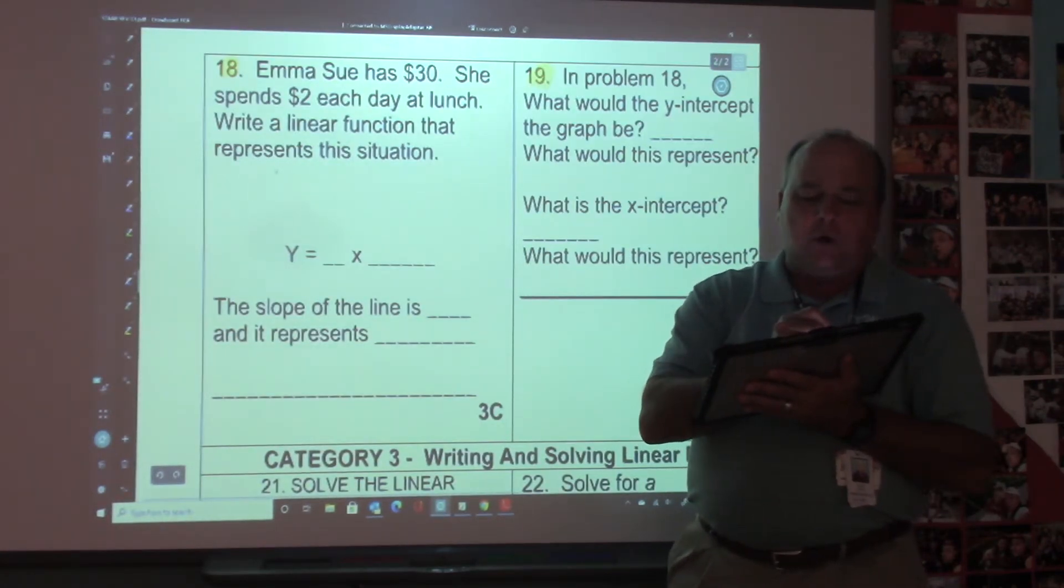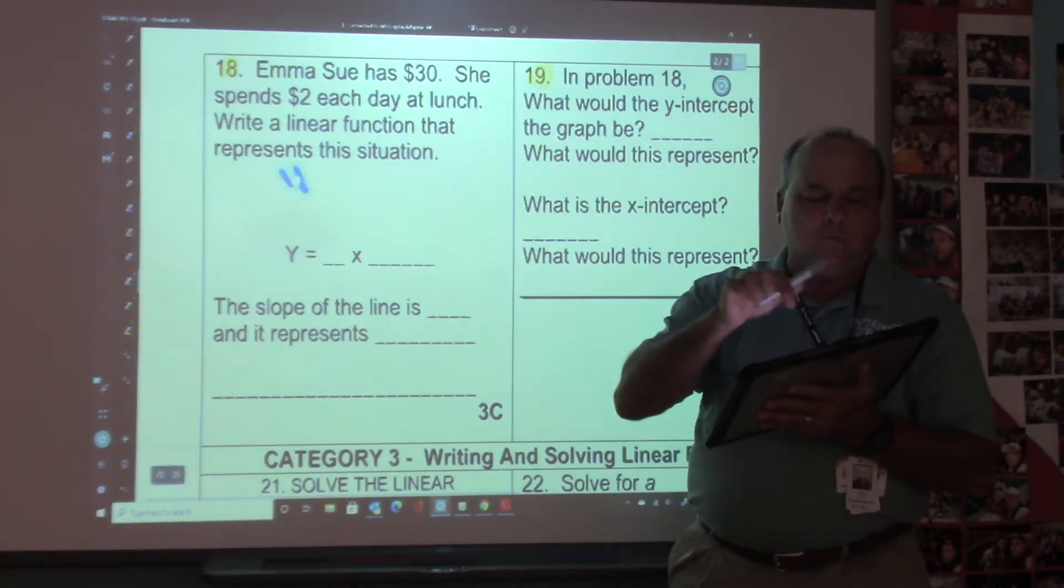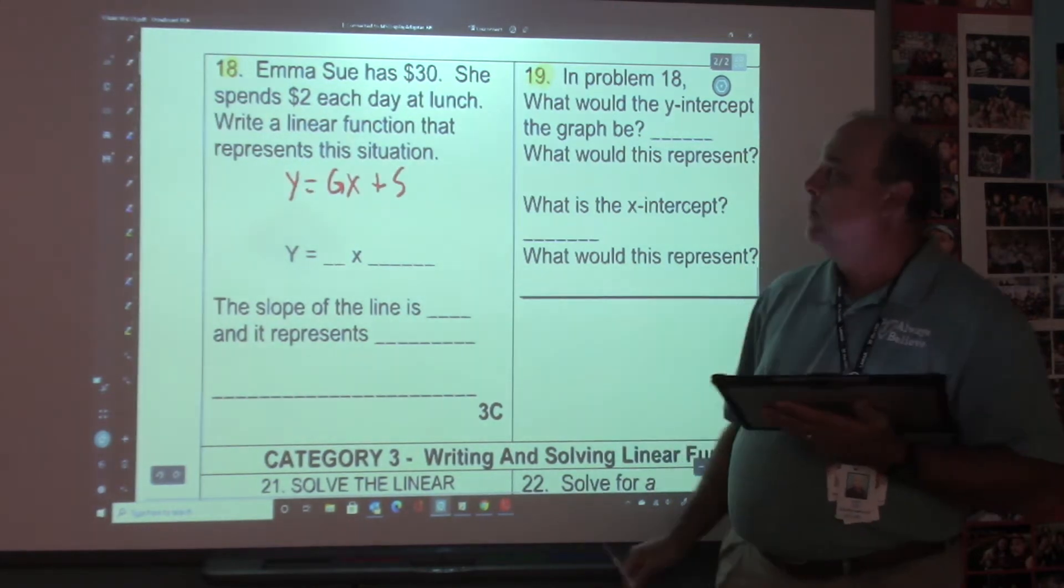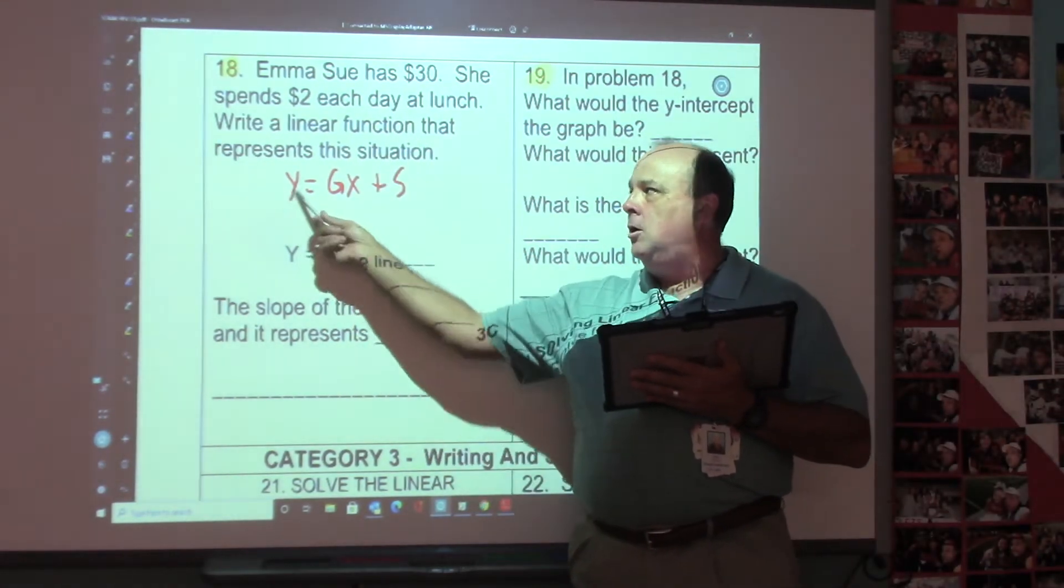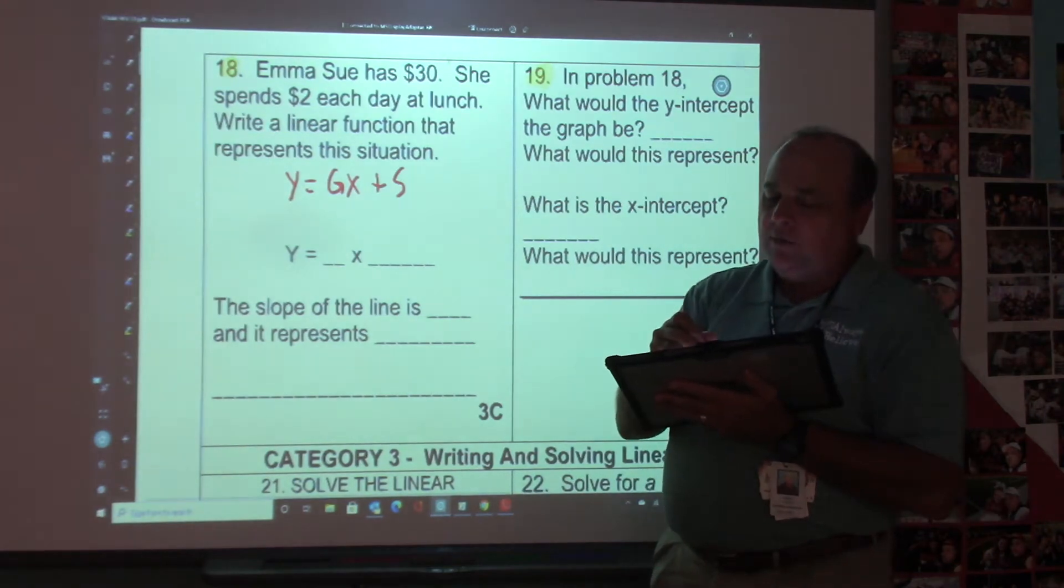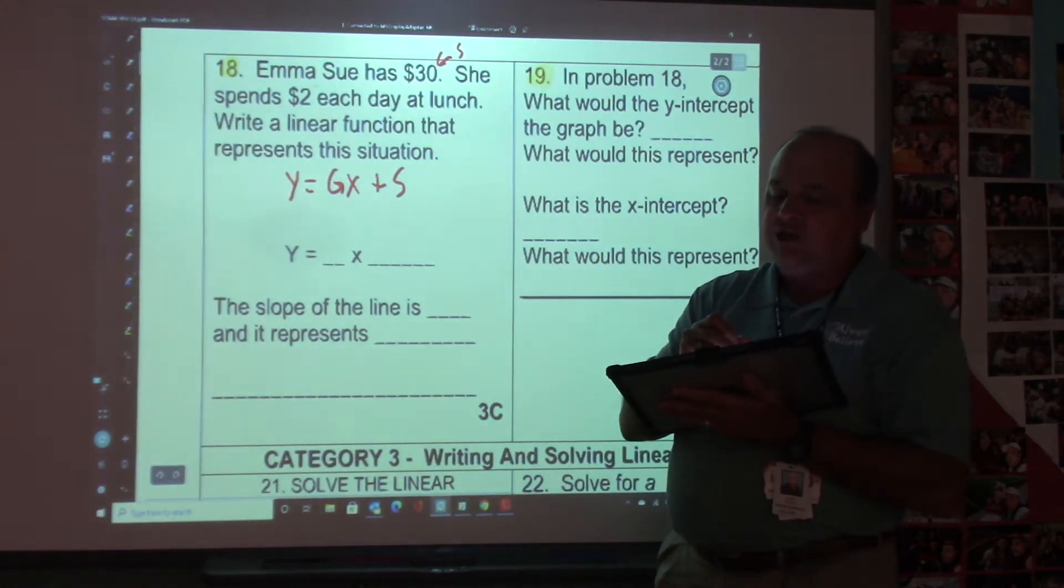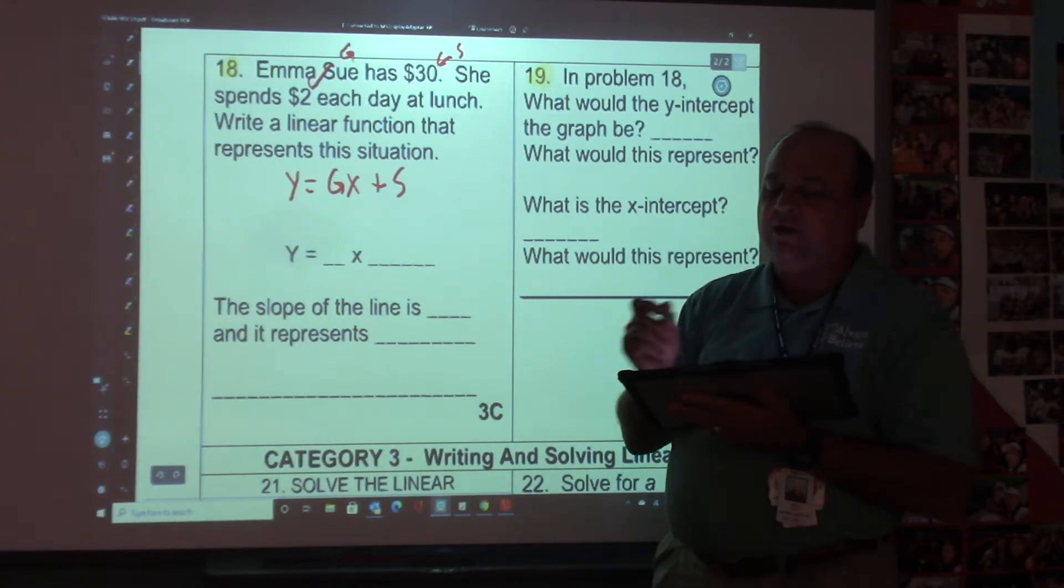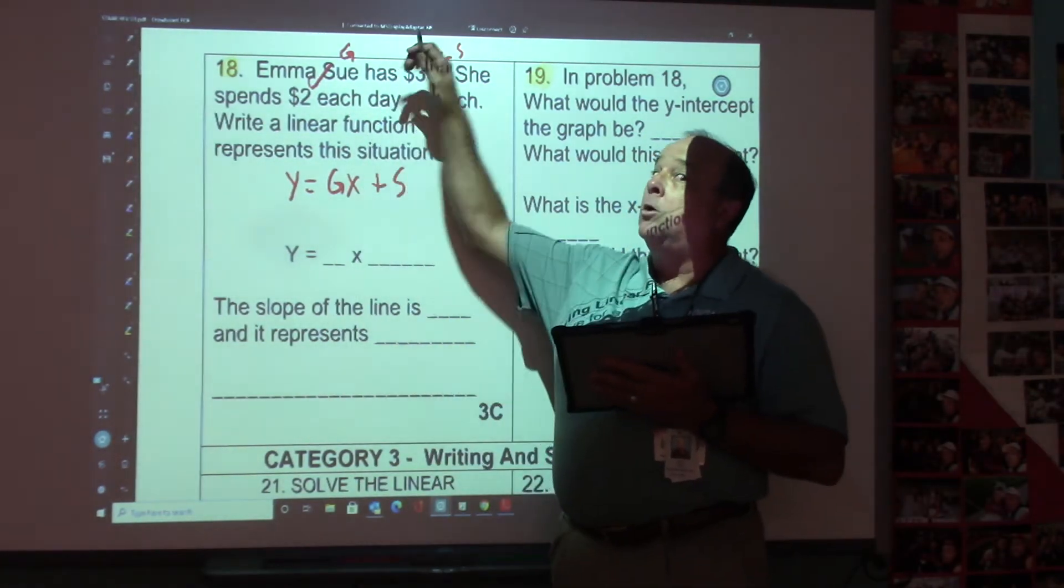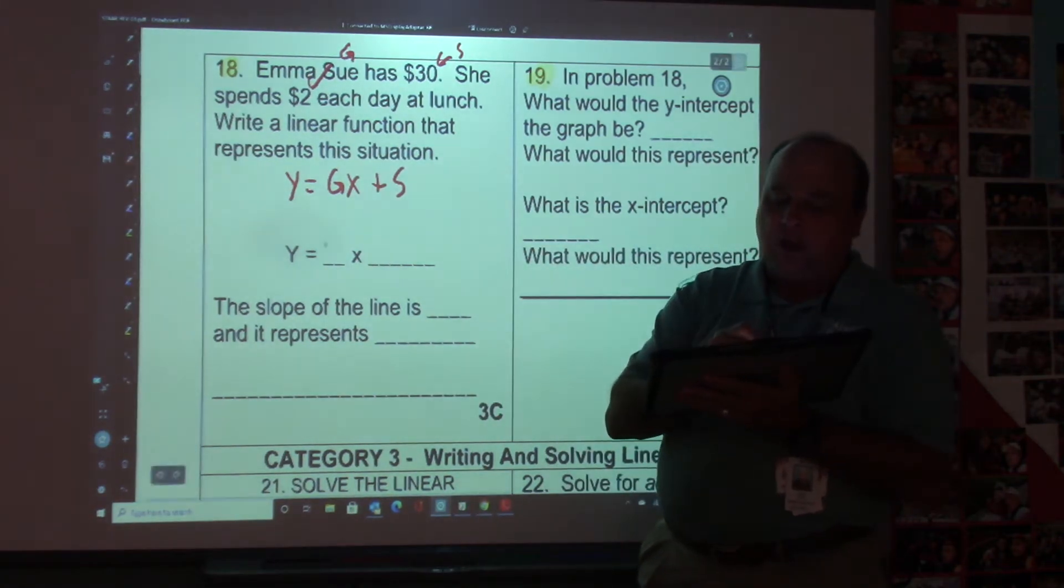To do this problem, we're going to write down Y equals GX plus S. So to go from a verbal description to an equation, I always use this. It makes it simpler. If you read this problem, Emma Sue has $30. That's your starting number. And she spends $2 each day. That's your growing number. Since she's spending money, her money won't go up. It will go down.